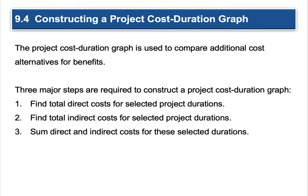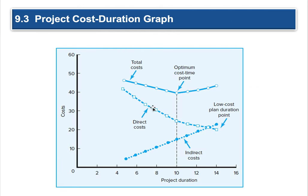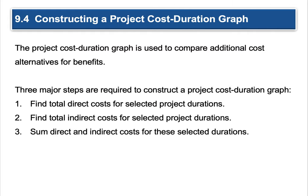Constructing a project cost-duration graph: the graph is used to compare additional cost alternatives for benefits. Three major steps are required. First, find the total direct costs for the selected project durations. These are your costs related directly to the project, and as you get more efficient they're likely going down over time as we see here.